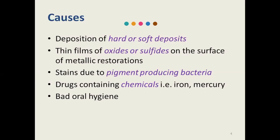What are the causes of tarnish? The first and foremost cause is the deposition of hard or soft deposits — these are plaque and calculus if the patient is not maintaining good oral hygiene. The second cause is thin films of oxides or sulfides on the surface of metallic restorations. Then there are stains due to pigment-producing bacteria — certain chromogenic bacteria present in our oral cavity may cause stains. Certain drugs containing chemicals like iron and mercury may also cause tarnishing. Because of bad oral hygiene, a discolored layer forms on the tooth, restoration, or any appliances — whether prosthodontic or orthodontic.